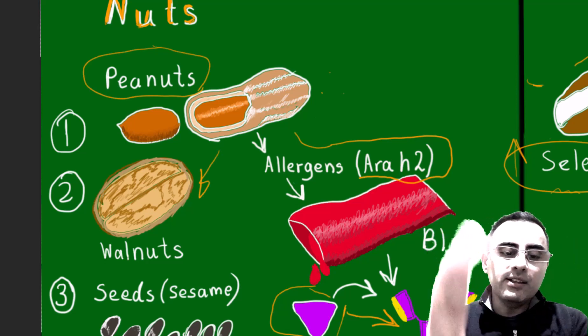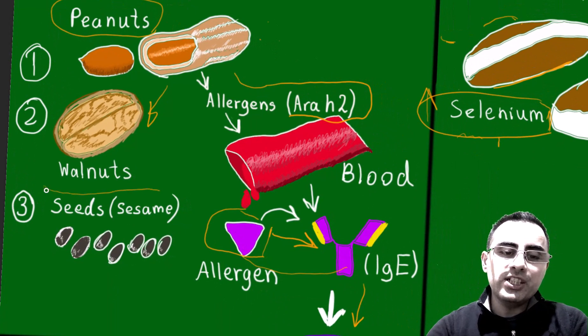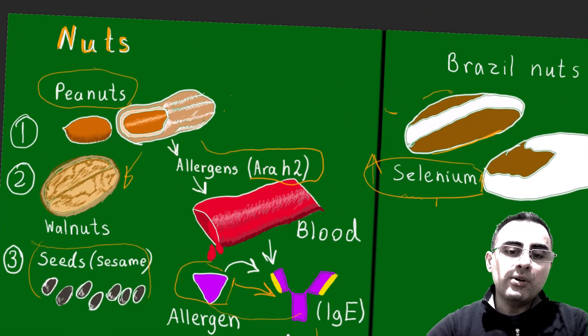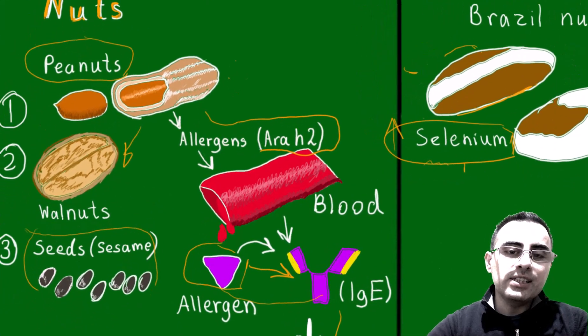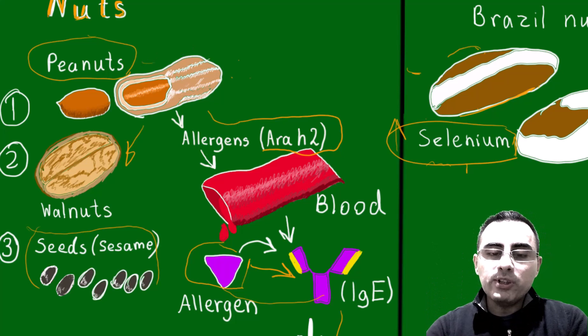The least allergens are seeds, for example chia and sesame seeds. They have the least allergy potential. So we should be careful towards nuts because especially peanut is an important allergen.